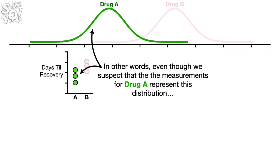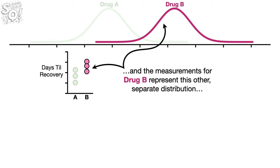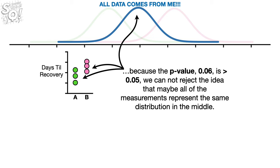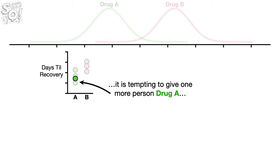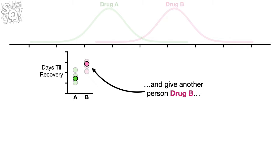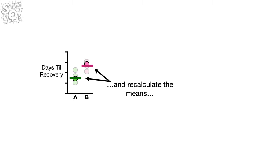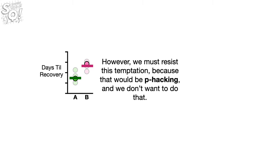In other words, even though we suspect that the measurements for drug A represent this distribution and the measurements for drug B represent this other, separate distribution, because the p-value 0.06 is greater than 0.05, we cannot reject the idea that maybe all of the measurements represent the same distribution in the middle. Because we suspect the measurements represent two different distributions and the p-value 0.06 is just a little bit bigger than 0.05, it is tempting to give one more person drug A, give another person drug B, recalculate the means, and then redo the statistical test. However, we must resist this temptation, because that would be p-hacking, and we don't want to do that.